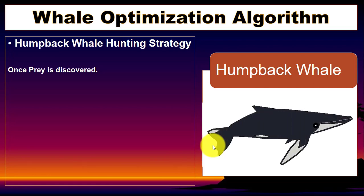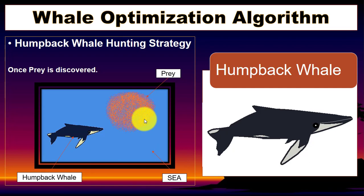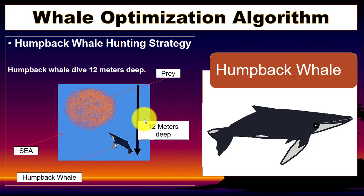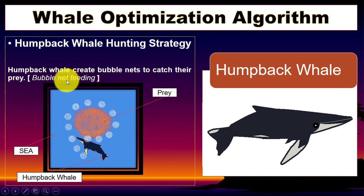First, we have the humpback whale. Once the prey is discovered, the first task is to locate the target. As you can see, we have the humpback whale and the prey. Once the target is discovered, the humpback whale dives 12 meters deep into the sea and creates bubble nets to catch the prey. This method is known as the bubble net feeding method.